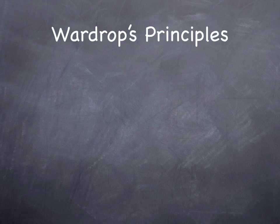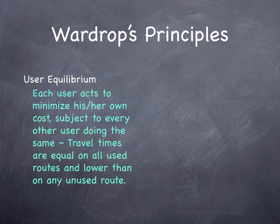What route will a driver choose? We mentioned the term user equilibrium before and will define it more carefully. John Glenn Wardrop, a transportation analyst from the United Kingdom, posited in 1952 two principles: one called the user equilibrium principle, and one called the system optimal principle.